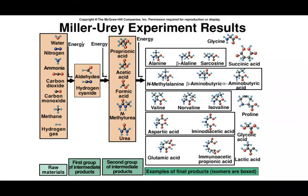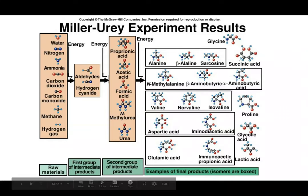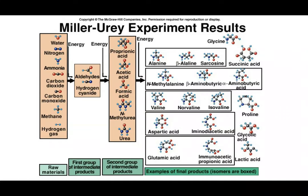What happens is you take energy, combine it with atmospheric gases, and produce the building blocks of life. Starting with aldehydes and hydrogen cyanide, you begin making important molecules like urea and propionic acid. Eventually, as you keep synthesizing, you can create amino acids—the building blocks of proteins—such as alanine and glycine, and other important molecules like lactic acid.